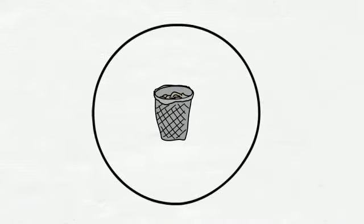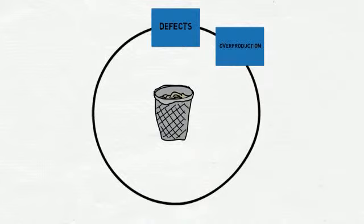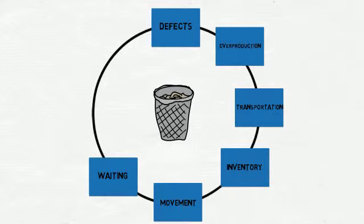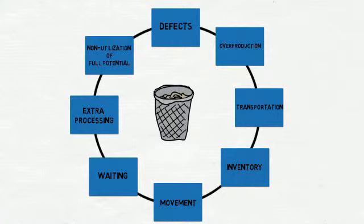The typical eight types of waste you may experience in your process are: defects, overproduction, transportation, inventory, movement, waiting, extra processing, and non-utilization of machine, equipment, or employees' full potential.